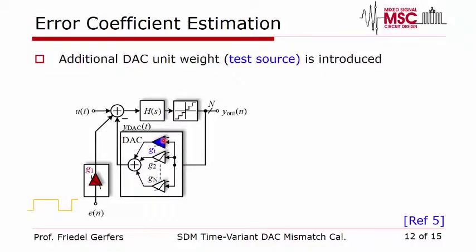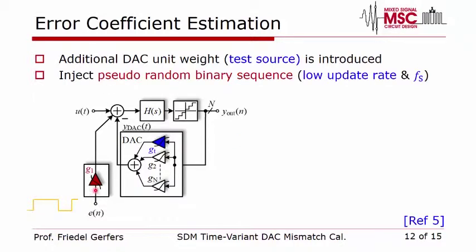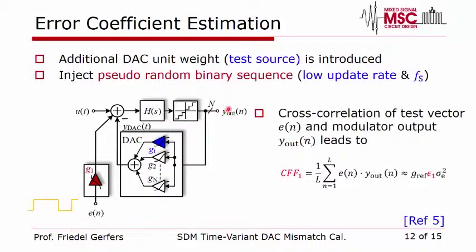The question now is how to estimate these errors. We add an extra current cell shown here in blue, which replaces one cell at a time in the feedback DAC. We inject a PRBS sequence that gets correlated at the output. To characterize the static time-invariant error we use a low update rate PRBS, and to analyze the time-variant error we use a high switching sequence. Cross-correlation at the output is used to measure all these errors for later digital-domain correction.